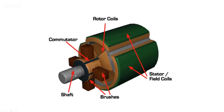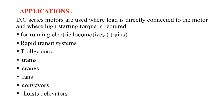Here is a picture of a series motor showing the commutator, brushes, central shaft, rotor coils, and the stationary field coils (also called stator). DC series motors are used where the load is directly connected to the motor and where high starting torque is required. Applications include electric locomotives (trains), rapid transit systems, trolley cars, trams, cranes, fans, conveyors, hoists, and elevators.